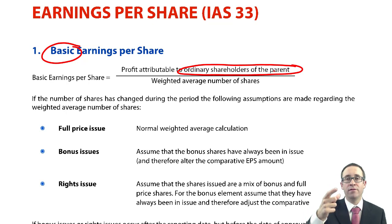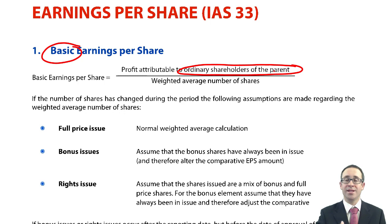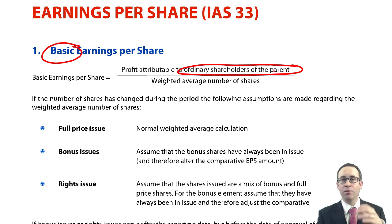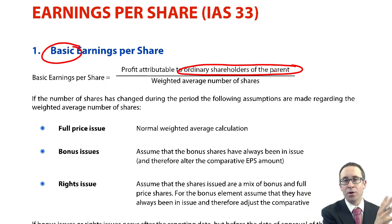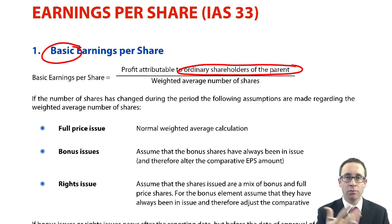Where you split that profit for the year out into that attributable to the parent and the NCI, you take the figure attributable to the parent. Likewise, it's the ordinary shareholders, so you may need to make adjustments for any preference share dividends, depending upon whether it is an irredeemable or a redeemable preference share dividend. In terms of the number of shares in issue, we don't look at the number of shares specifically just at the end of the year. Those profits have accrued evenly over the year, and we need to look at when those shares during the year have been issued — to try to match up a higher number of shares issued with a higher level of profits, because as we've issued shares for cash, that cash will then be used to generate additional profits.